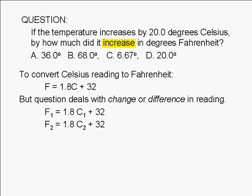Now let's take the difference. F2 minus F1 equals 1.8 times C2 minus C1. Note that 32 cancels out when you take a difference between two temperature readings.